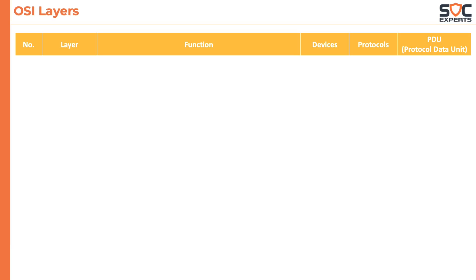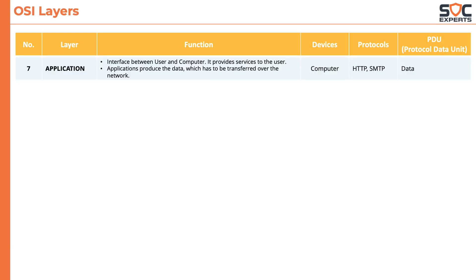Let's start from the top — layer 7, the application layer. This layer acts as an interface between users and computers and provides various services to the users. Applications produce a lot of data which has to be transferred over the network. The computer works at layer 7, and the protocols that work at this layer include HTTP, SMTP, FTP, etc. The data is in its original format — that is, data itself.